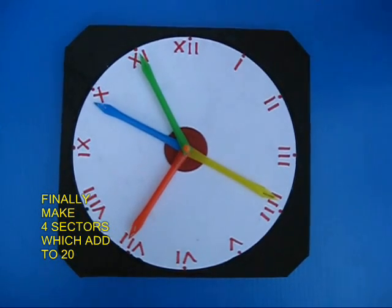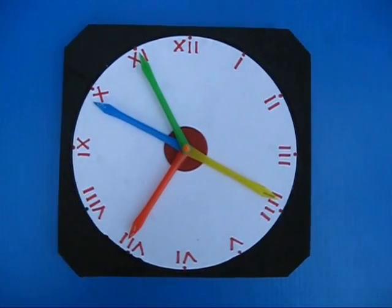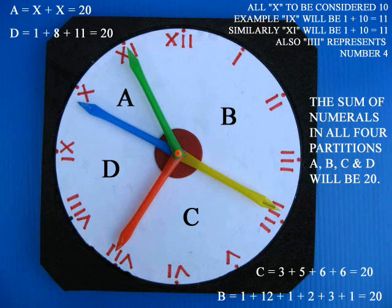This is how you can divide the face of the clock with Roman numerals into four sectors such that the sum is 20.